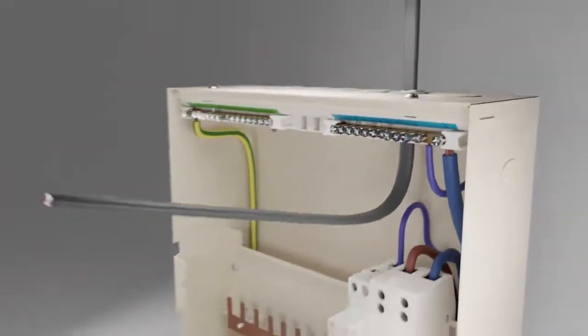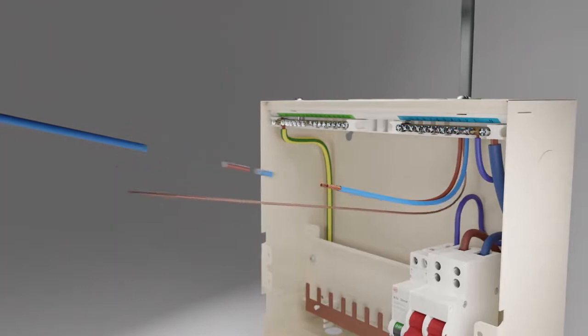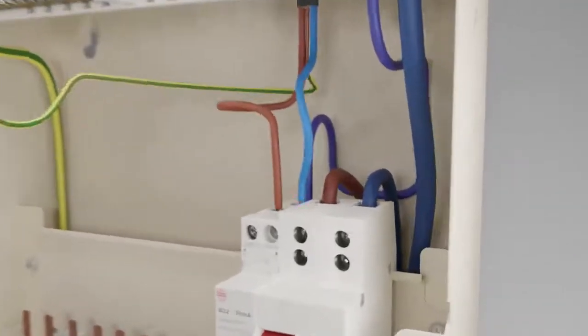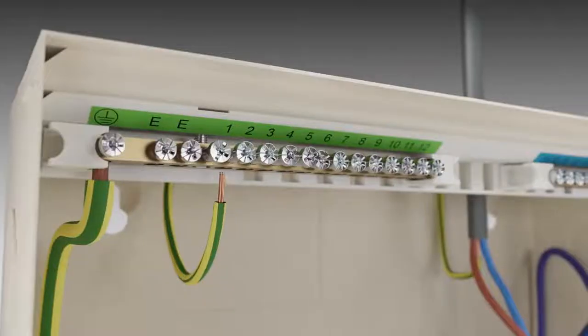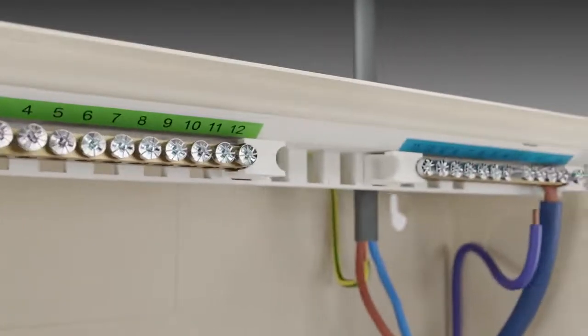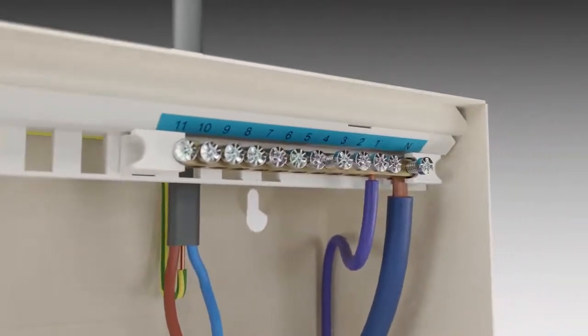Wilex AFDDs are two pole switching, so both live and neutral outgoing circuit cables must be connected to the device and the neutral input lead must be connected to the appropriate terminals on the terminal bar of the consumer unit.